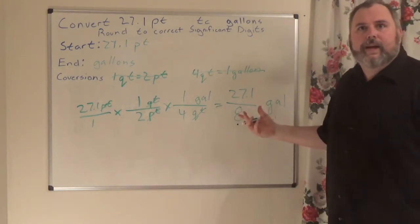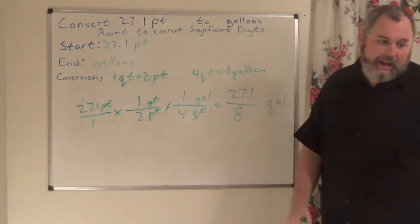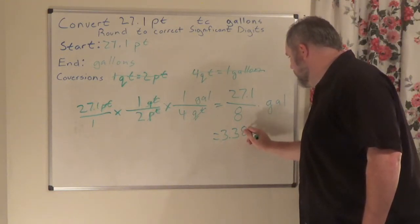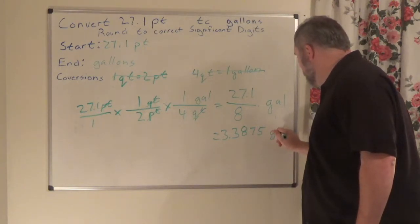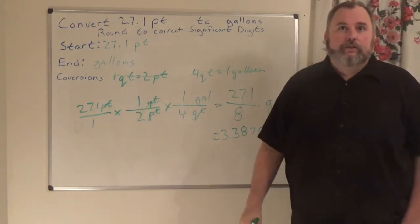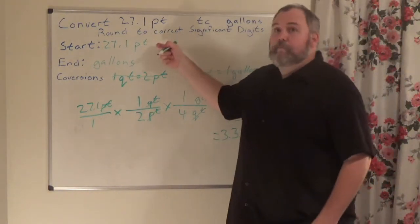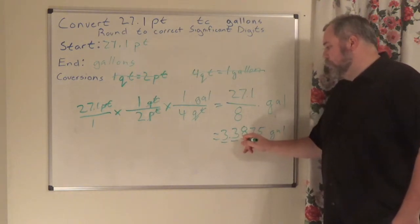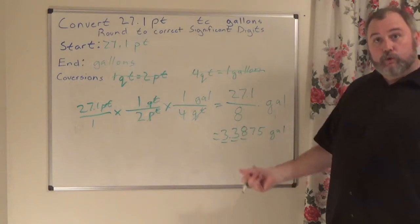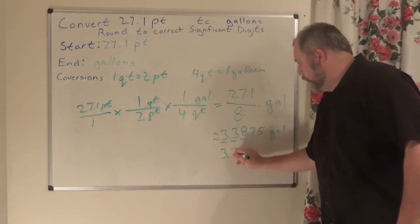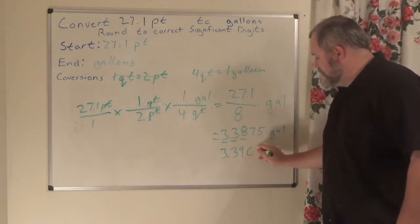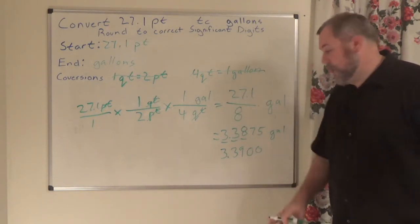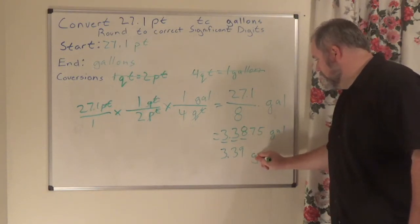Now divide: 27.1 divided by 8 gives us 3.3875 gallons. But the problem told me to round to the correct significant digits. How many did I start with? Going back to my starting position, 27.1 has three significant digits. So I need three significant digits: 3.39 — the 7 tells the 8 to round up. The trailing zeros get dropped, so the final answer is 3.39 gallons.